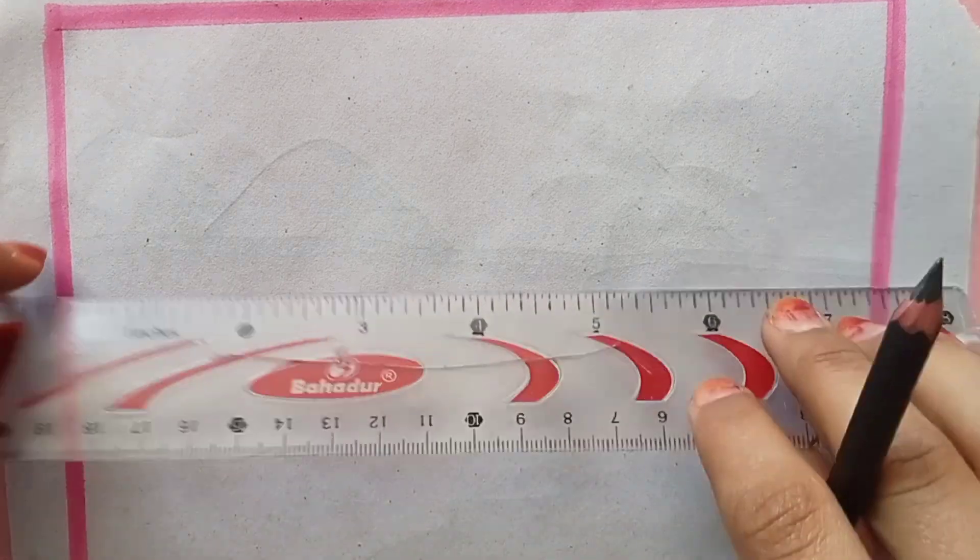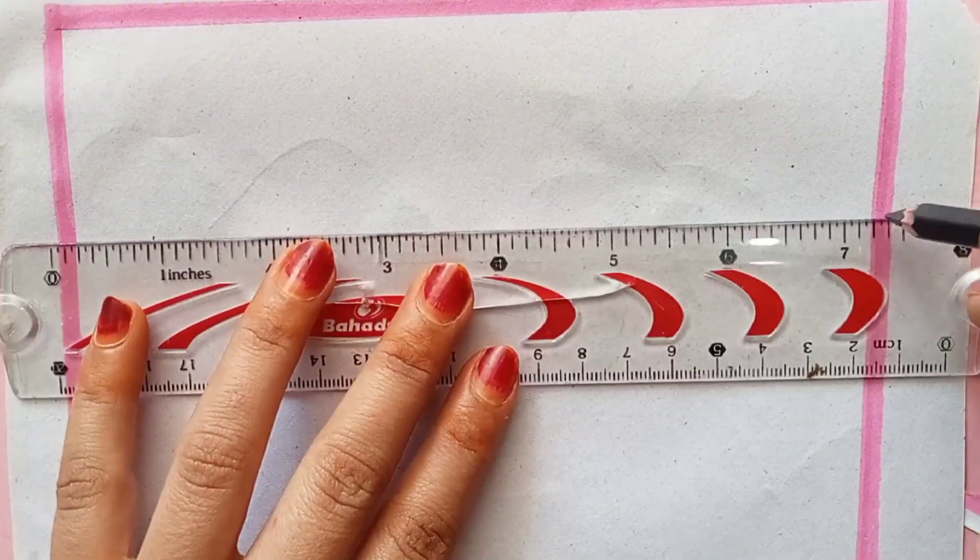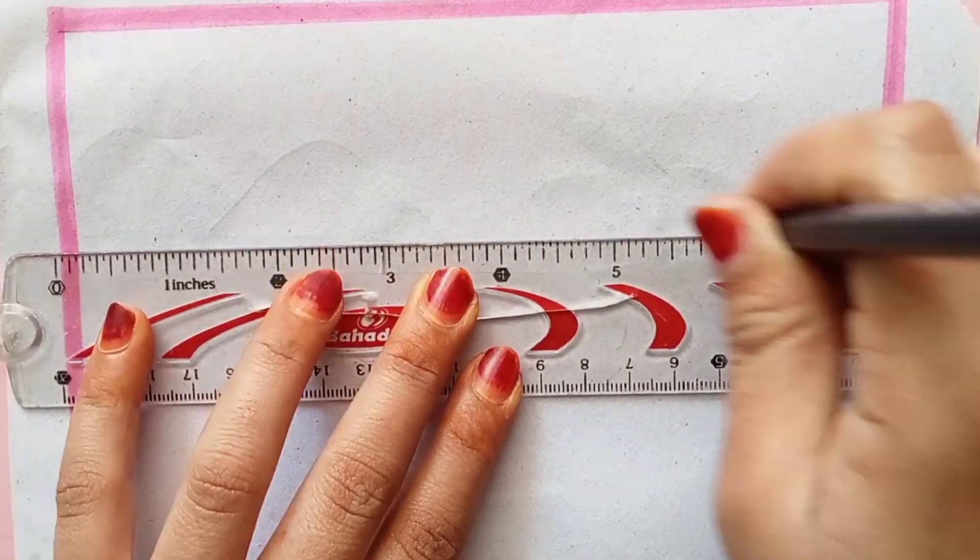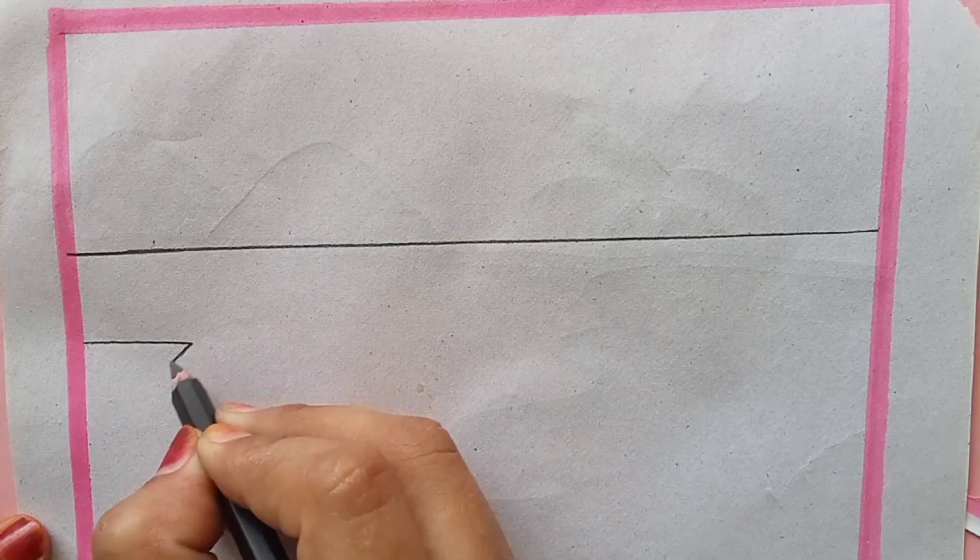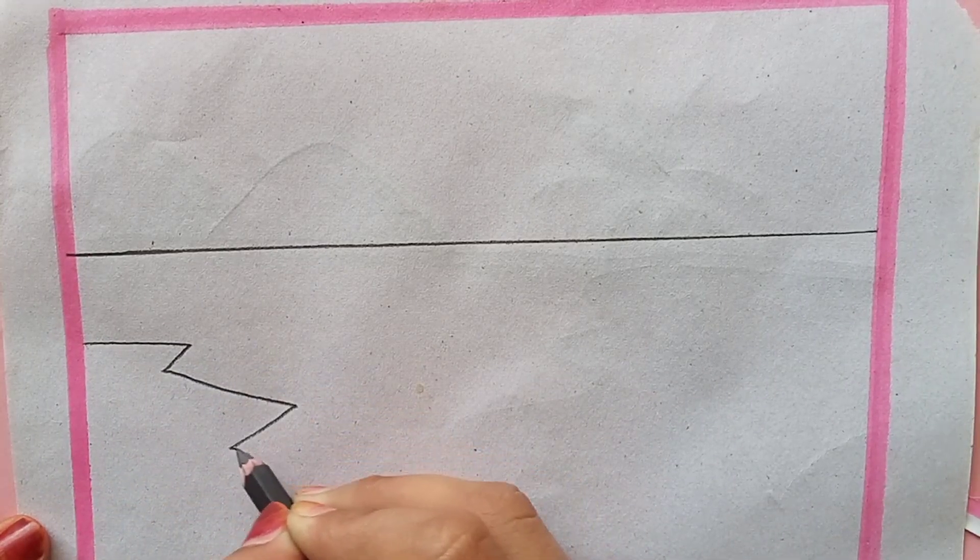Assalamualaikum, welcome to Ariba drawing tutorials. This is Ariba here and I'm drawing simple, easiest beginner drawings. So today I am drawing a beautiful sunset scenery of a beach. So let's start. First of all, I'm using here a 6HP pencil.